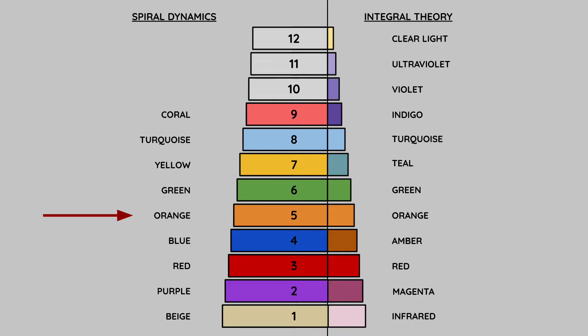Welcome everyone. We're taping this at the beginning of August and we're both wearing orange today because we are continuing our series of videos for our clients and for anyone who wants to learn about this wonderful human development model called Spiral Dynamics. Today we are talking about the orange stage — hence we are color coordinated with the stage we're discussing.